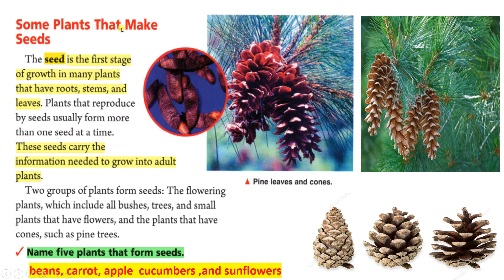Some plants that make seeds. The seed is the first stage of growth in many plants that have roots, stems, and leaves. Plants that reproduce by seeds usually form more than one seed at a time. These seeds carry the information needed to grow into adult plants. Two groups of plants form seeds: the flowering plants, which include all bushes, trees, and small plants that have flowers, and the plants that have cones, such as pine trees.